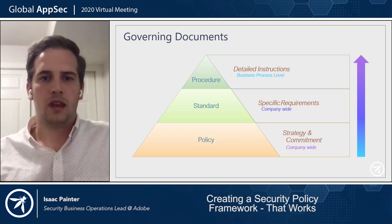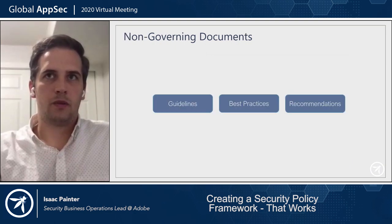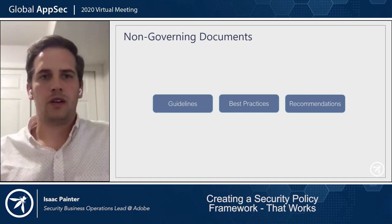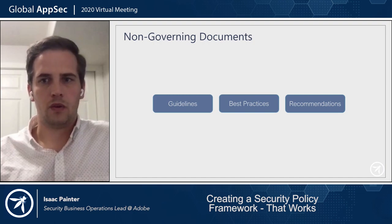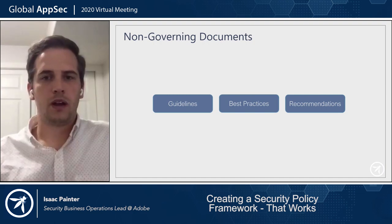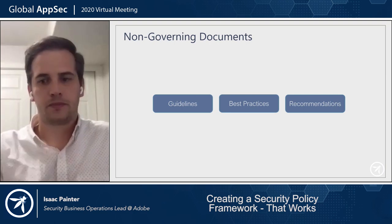Your why is really in your policy. Your governing documents — policies, standards, and procedures — are your must-haves. Your non-governing documents are your nice-to-haves or should-haves: guidelines, best practices, or recommendations. Best practices can sometimes be converted into must-haves, but they're often should-haves.